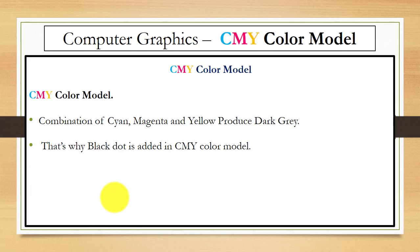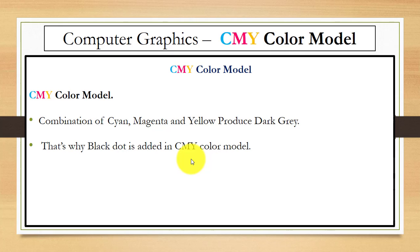Why are we adding an extra black dot in this color model? Because the combination of cyan, magenta, and yellow produces dark gray color instead of black. That's why we need to add an extra black ink dot in the CMY color model. So that's a short introduction to the CMY color model. If you have any questions, comment below, and thanks for watching.